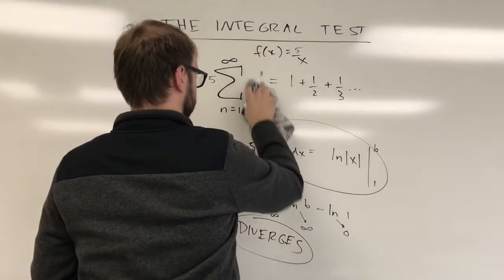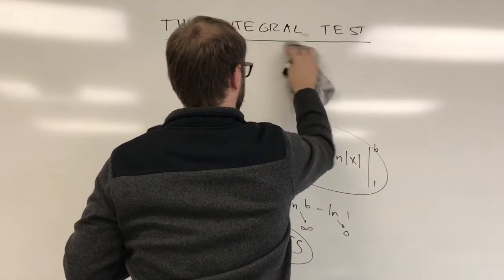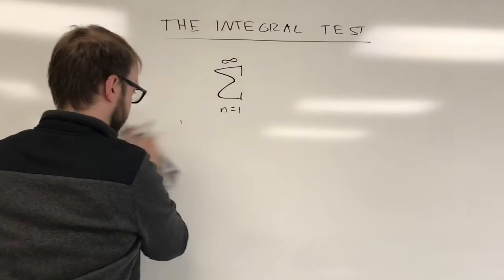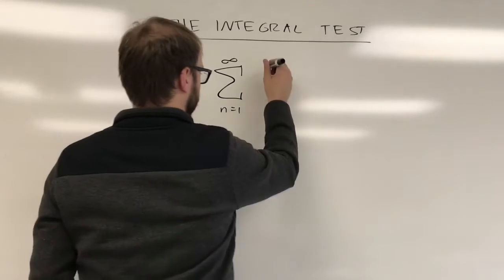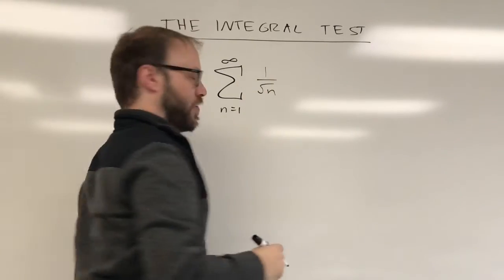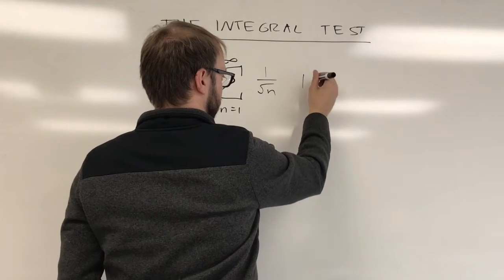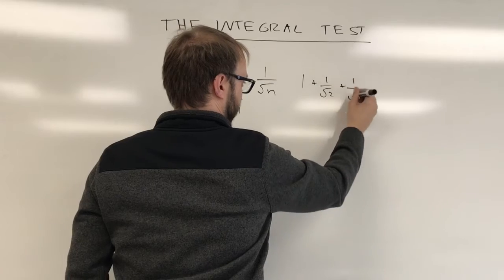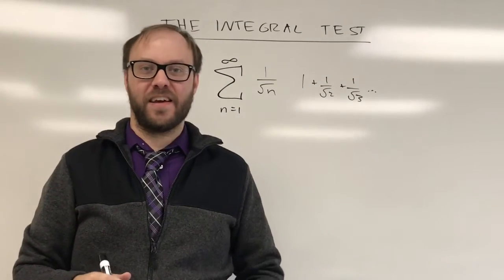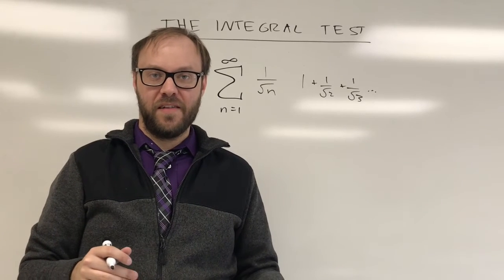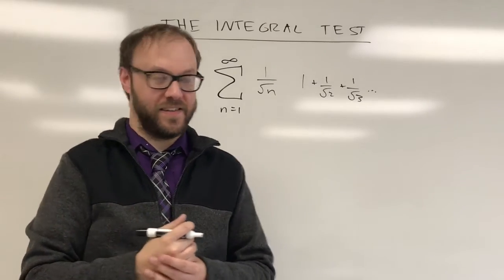Let me show you one additional example, and this is actually going to lead into something called p-series in the next section. So I want to look at another function that kind of looks like this. We're gonna do 1 over radical n. And so once again, you may want to substitute in a few terms. That would be 1 over 1 plus 1 over radical 2 plus 1 over radical 3 and so on. And you may look at that and say, well, that kind of looks like a harmonic. So maybe it's going to diverge, and maybe it does. But again, you do want to go through the process and you want to check and see.